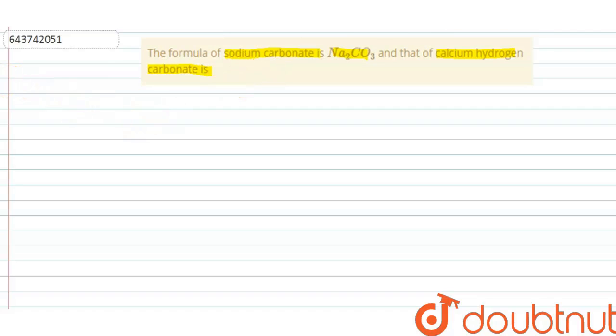So Na2CO3, that is sodium carbonate. The formula is Na2CO3. This indicates that the valency of carbonate will be minus two.